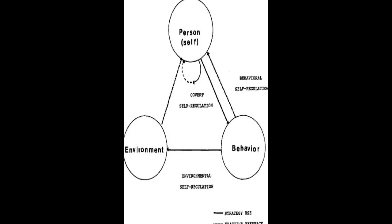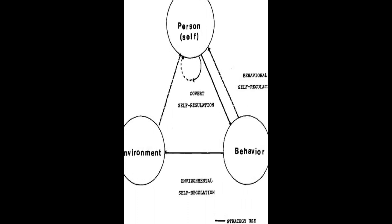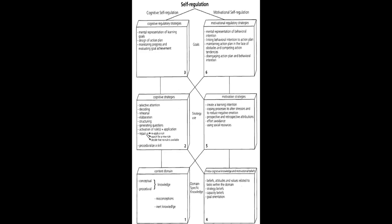The models are then compared in terms of phases and subprocesses, how they conceptualize metacognition, motivation, and emotion, top-down/bottom-up, automaticity, and context.